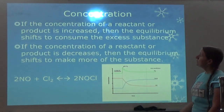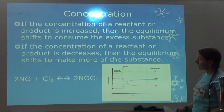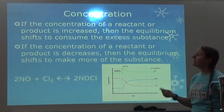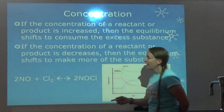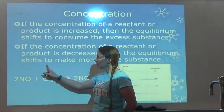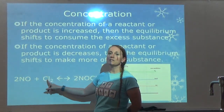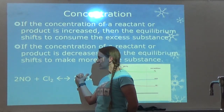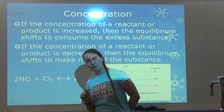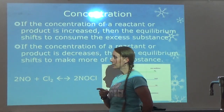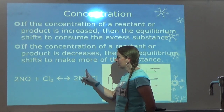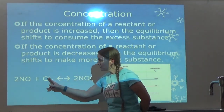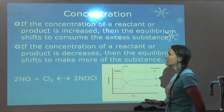If the concentration of a reactant or product is increased, then the equilibrium shifts to consume the excess substance. So if I have a reactant and I increase it — now it's too much — it's going to shift toward the products to consume that extra reactant. However, if I increase an amount of product, it wants to get rid of it, so it's going to shift to the reactants to consume that product.